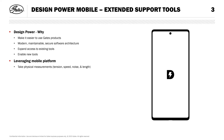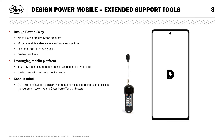You can use GDP Mobile to take critical belt drive physical measurements including tension, speed, noise, and length with no special tools. These useful functions are always available with the convenience of your mobile device. Please keep in mind that these extended support tools are not meant to replace purpose-built precision measurement tools like our dedicated Gates sonic tension meters, but rather to augment your capabilities and give you convenient access to critical drive details. These extended support tools are limited by the hardware supplied in mobile devices and are unlikely to be as accurate or precise as purpose-built tools.